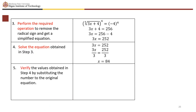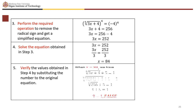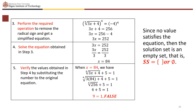Verify x equals 84 in the original equation: fourth root of (3 times 84 plus 4) plus 5 equals fourth root of 256 plus 5 equals 4 plus 5 equals 9, which does not equal 1. The result is false. Therefore no value satisfies the equation, and the solution set is the empty set.